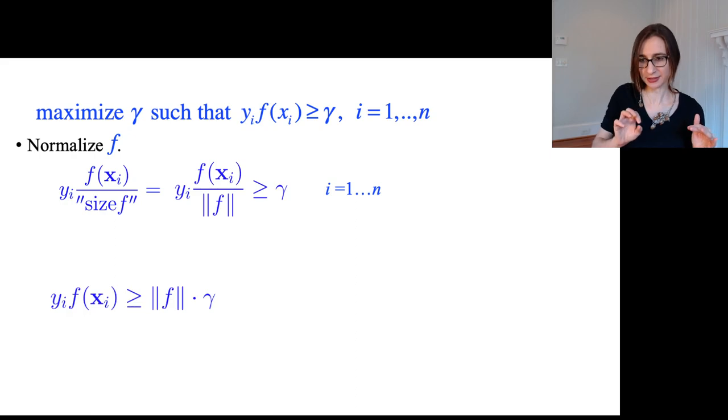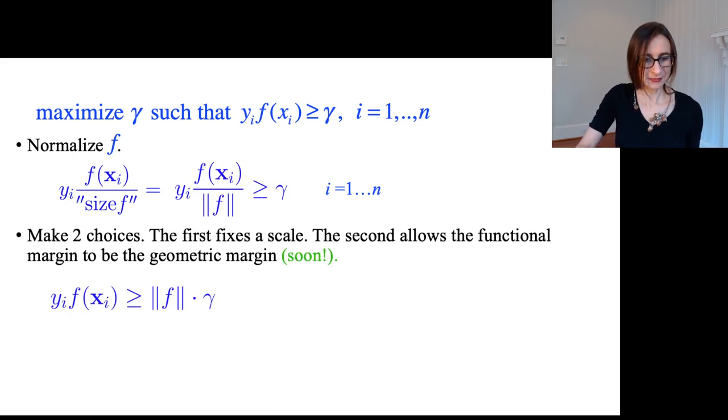I'm just putting the norm on the other side there. Nothing fancy. And then I'm going to make two choices. They are both modeling decisions. The first one fixes a scale. The second one allows the functional margin to be equal to the geometric margin. So I will go over both of these.